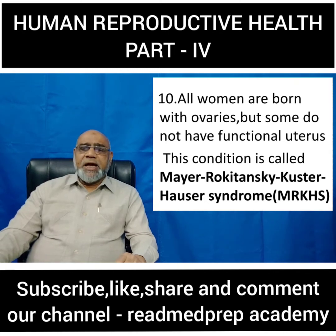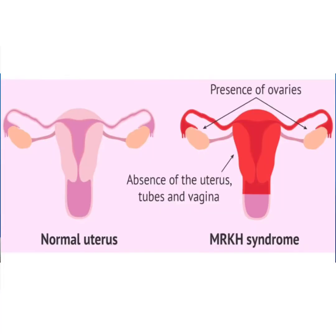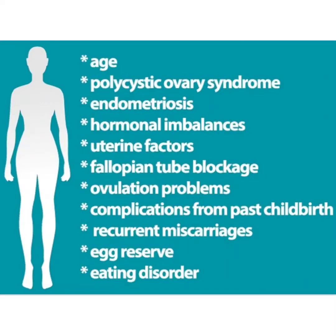In MRKHS, there are functional ovaries and fallopian tubes, but the uterus, tubes, and vagina are absent. To summarize, factors of female infertility include age, polycystic ovary syndrome, endometriosis, hormonal imbalances, uterine factors, fallopian tube blockage, ovulation problems, complications from past childhood illness, recurrent miscarriages, egg reserve, and eating disorders like anorexia nervosa.